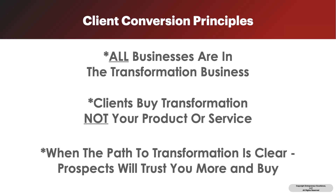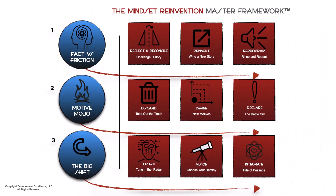Take a look at this mindset reinvention framework that I use with our clients in the Entrepreneur Excellence Alliance to literally change the way they think so that they can change the things they achieve. On the left are three phases; on the right are three segments within each of those phases. By reading or following this, they will see there's a transformation potential — a roadmap for transformation — and I explain that as we go through the program.